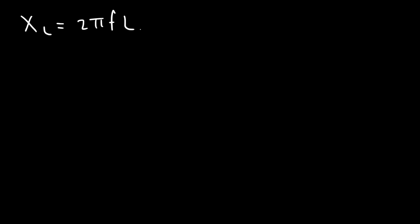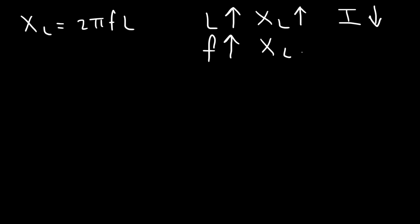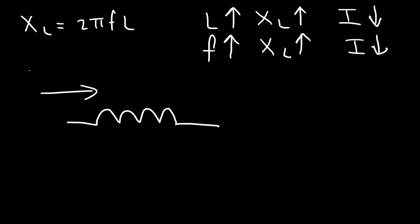Let's review some formulas. The inductive reactance is 2πFL. If you increase the inductance, the inductive reactance increases and the current decreases. If you increase the frequency of the AC signal, the inductive reactance also increases and the current decreases. In a DC circuit, the inductor provides very little opposition to current, but in an AC circuit it has high inductive reactance — especially at high frequencies. So an inductor is useful for passing DC signals while blocking AC signals.